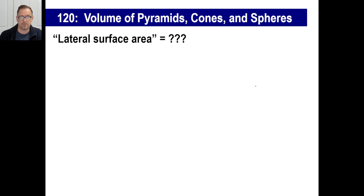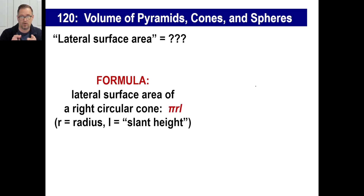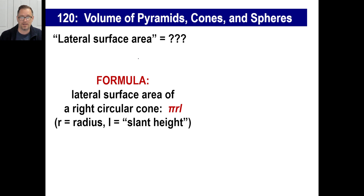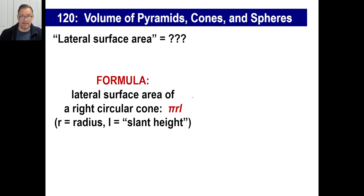Lateral surface area is the second part. 'Lateral' means side. The lateral surface area of a right circular cone is pi times the radius times the slant height — where L stands for slant height. You can find the area of the circular bottom with pi times the radius squared, but now we also have a formula for the side of the cone: π × r × L.